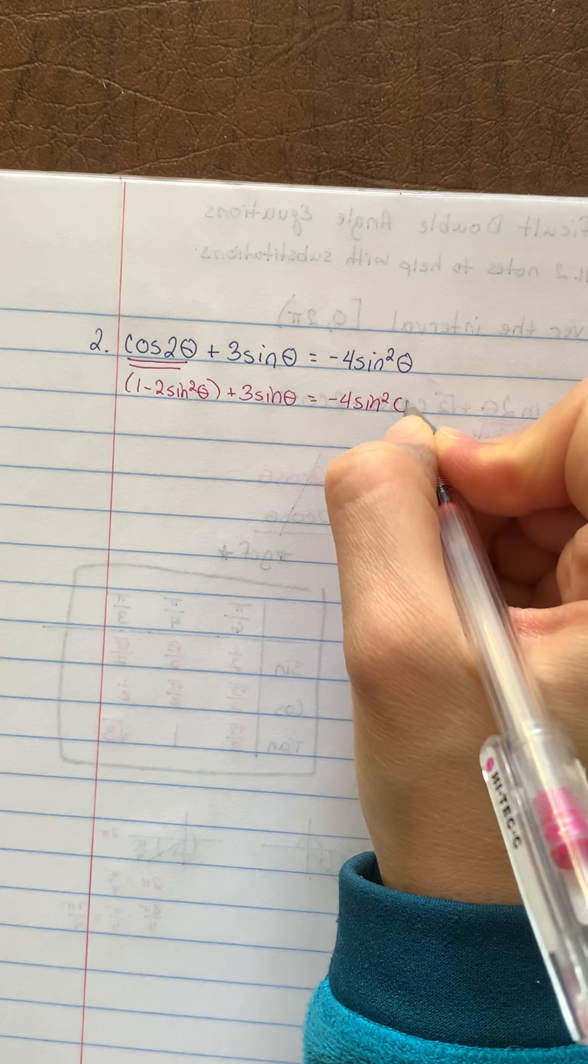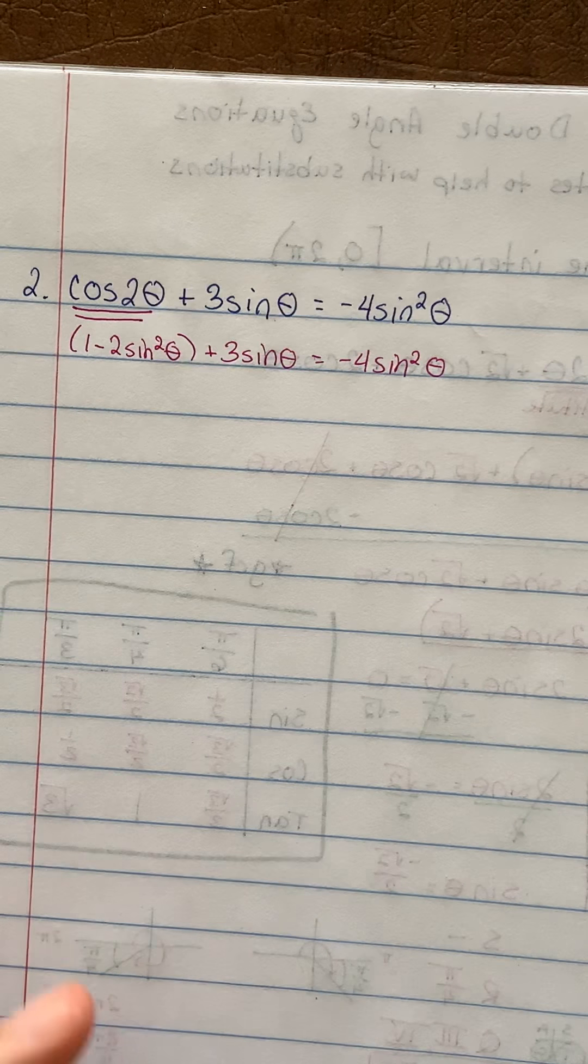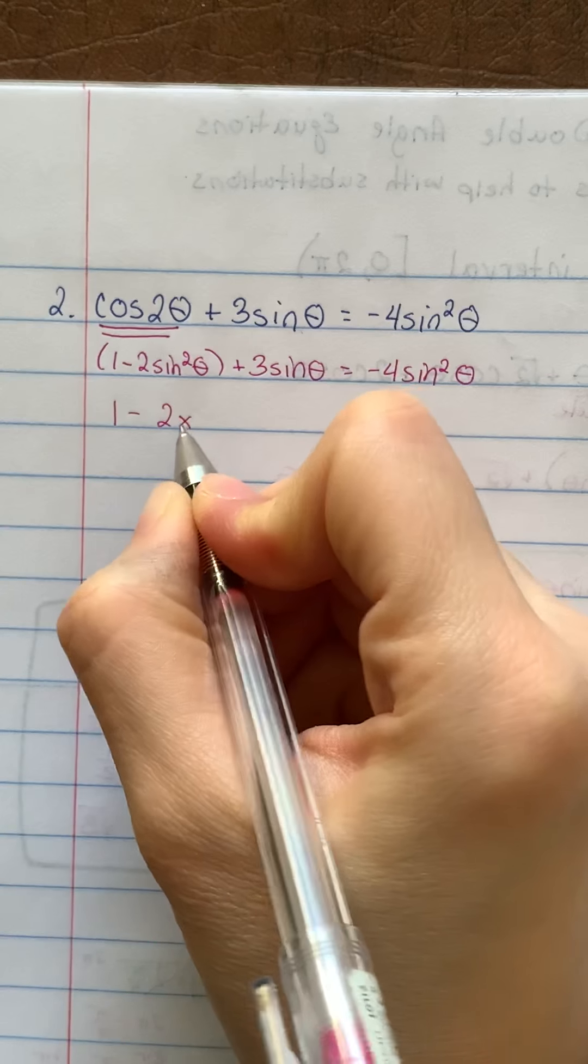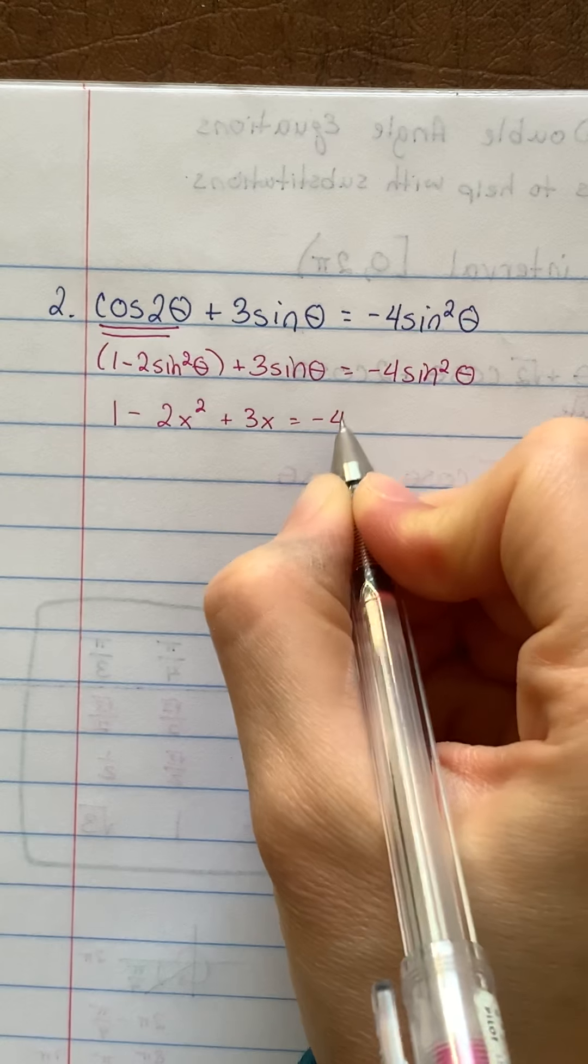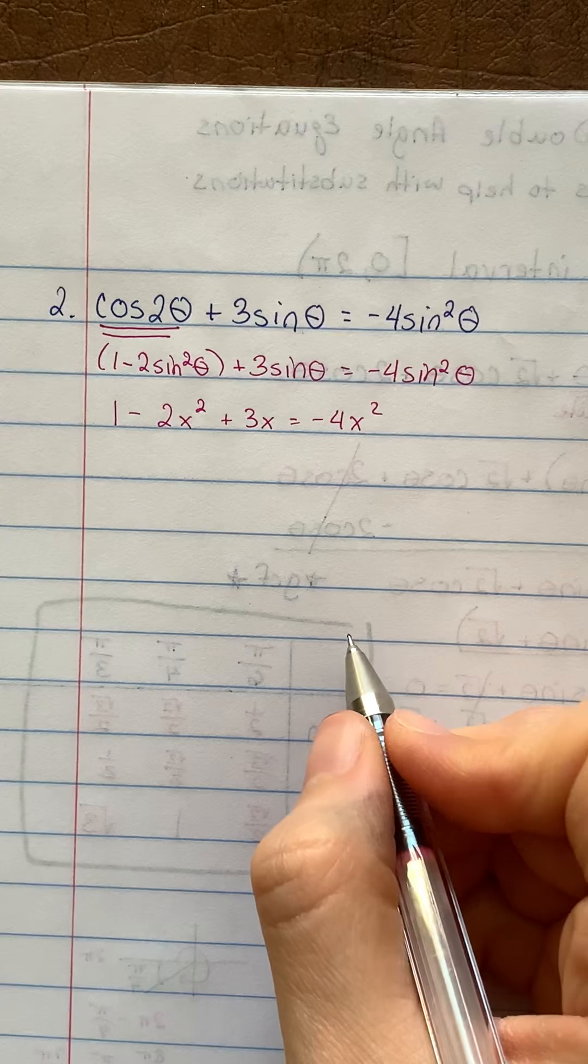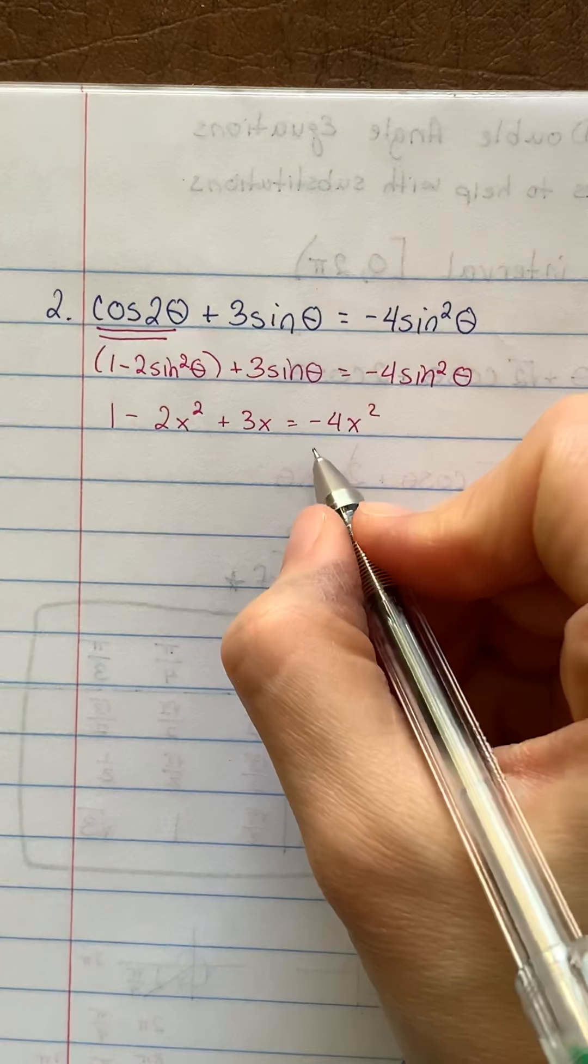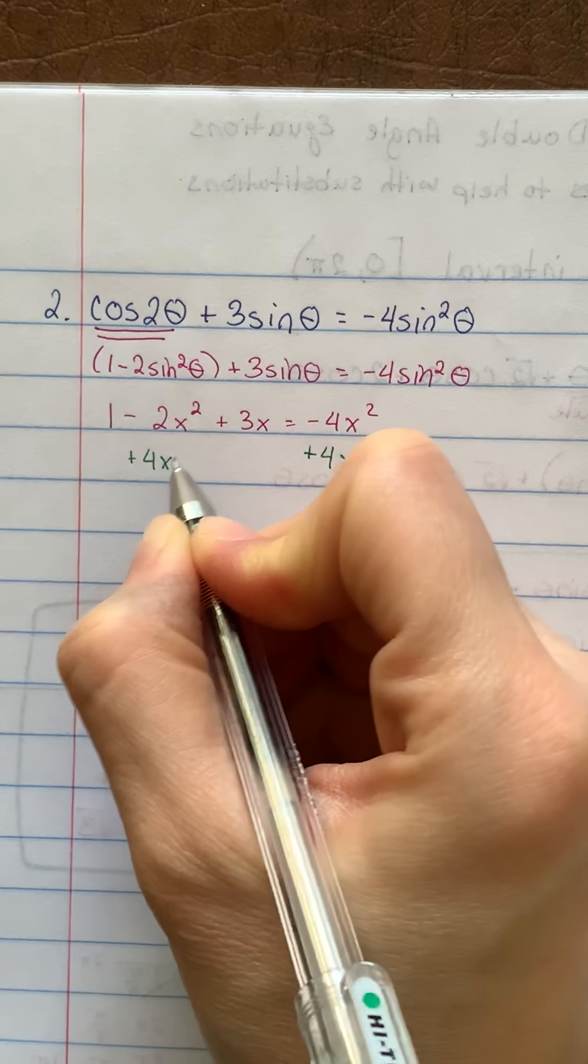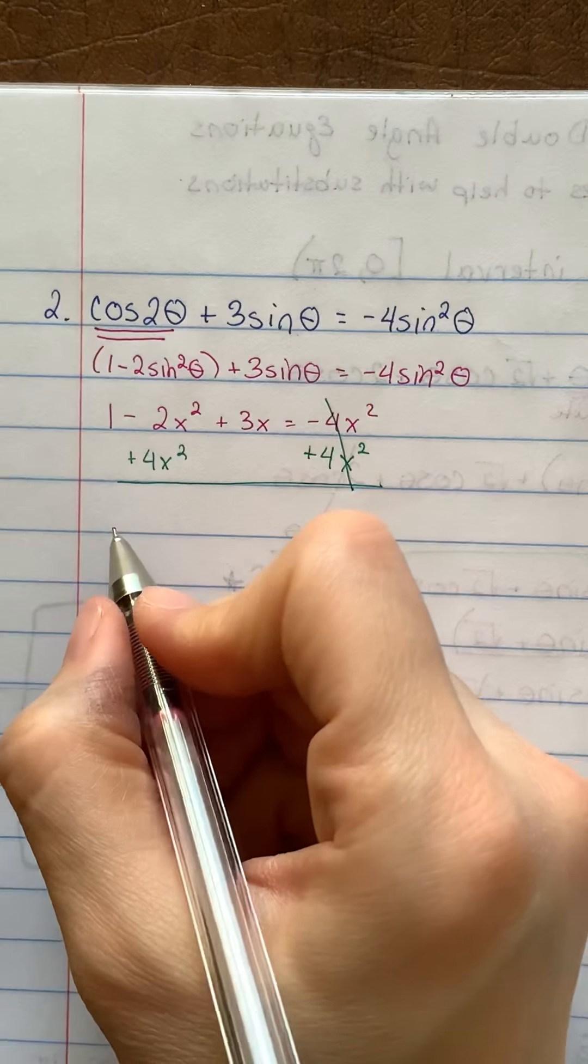I'm going to bring everything else down. And one of the strategies that we learned this year was that if you have a trig function and it's the same throughout, instead of using that trig function, I can just use x in place. I'm going to rewrite this as 1 minus 2x² plus 3x equals negative 4x². Now I've got a nice quadratic. I can go ahead and add 4x² to both sides. That would enable me to get this to be equal to 0.